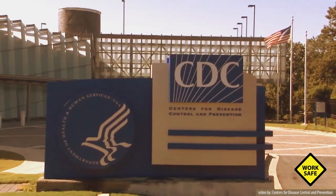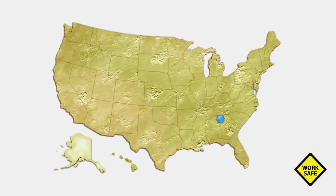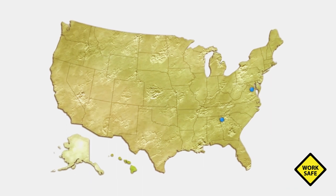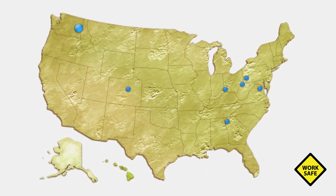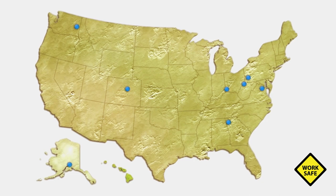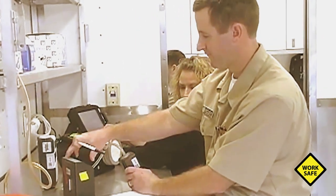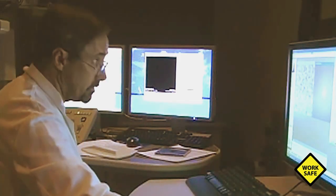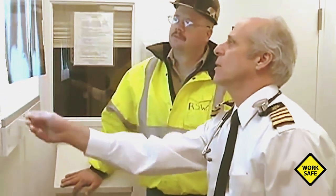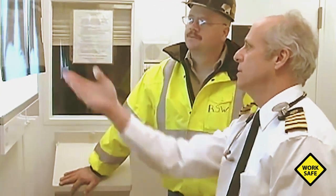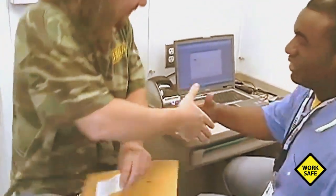Today, NIOSH is part of the Centers for Disease Control and Prevention, and has nearly 2,000 researchers, support staff, and contractors in eight locations across the U.S. NIOSH represents a wide range of disciplines, including epidemiology, safety, psychology, engineering, chemistry, statistics, and research translation.